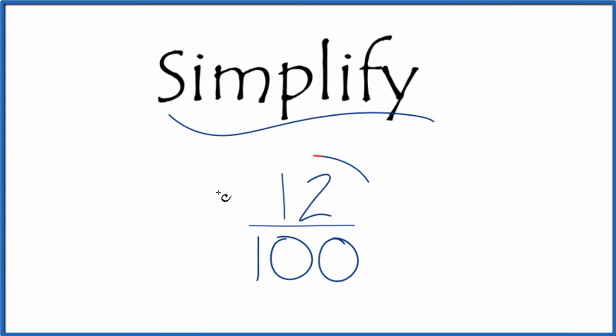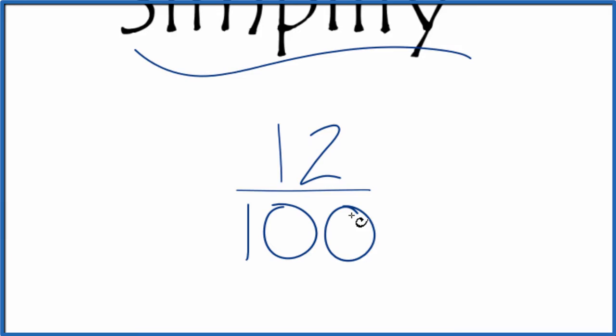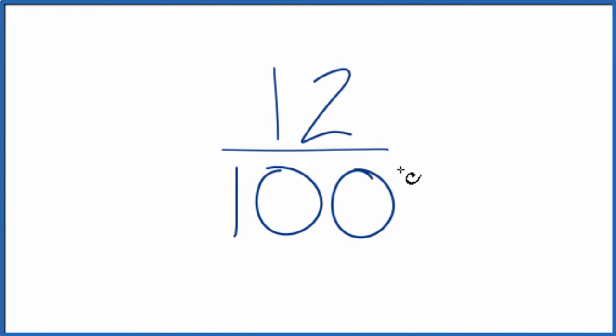Let's simplify the fraction 12 over 100. We're looking for a fraction that's equivalent to 12 over 100. It has the same value, it's just that we've simplified it to its lowest terms.